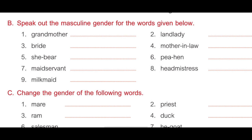Sixth, hen — answer is peacock, P-E-A-C-O-C-K. Seventh, maidservant — answer is manservant, M-A-N-S-E-R-V-A-N-T. Eighth, headmistress — answer is headmaster, H-E-A-D-M-A-S-T-E-R. Ninth, milkmaid — answer is milkman, M-I-L-K-M-A-N.